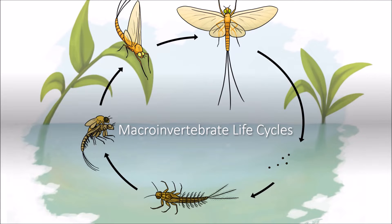There are some macroinvertebrates that spend their entire lives in aquatic ecosystems. However, most live in the water until they reach maturity. At maturity, they undergo a metamorphosis and leave the water. Compared to their larval stage, many aquatic insects are only in their adult form for a relatively short period of time.